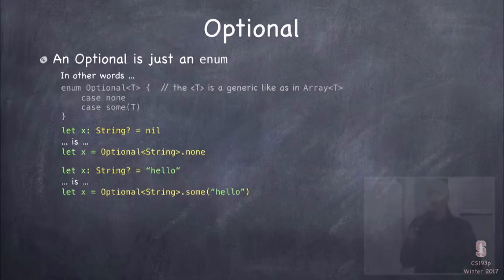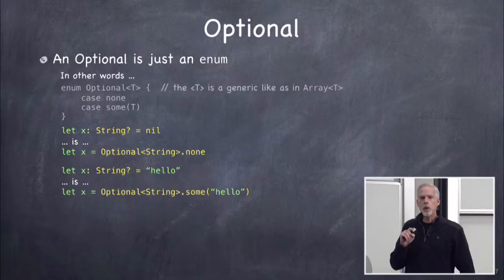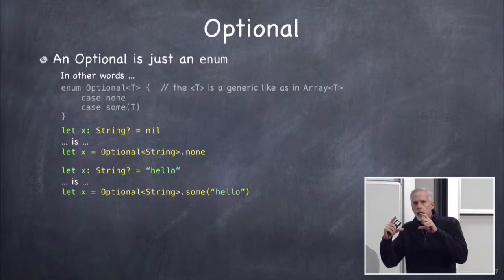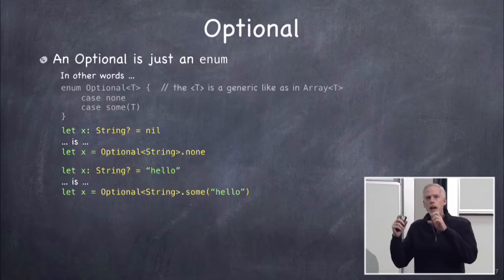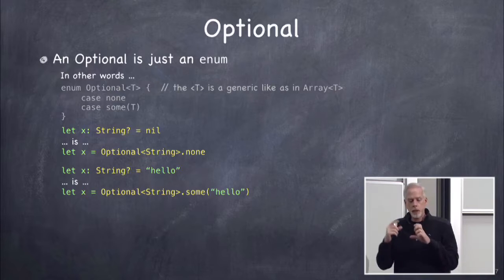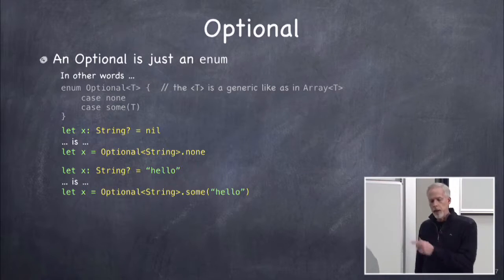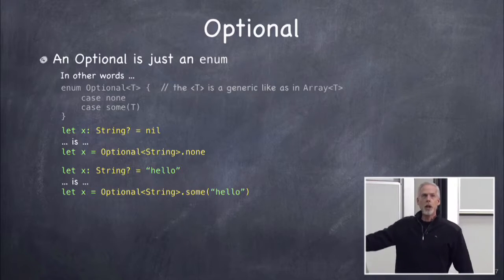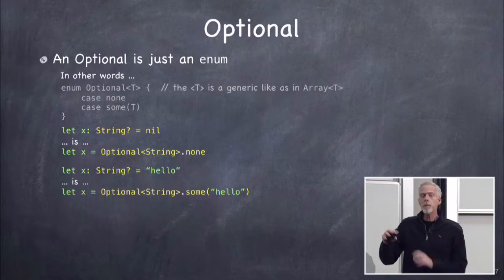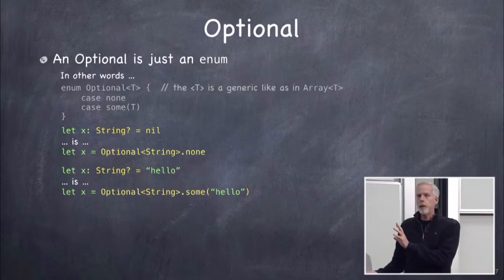What makes optional confusing is all those question marks and exclamation points — but that's just syntactic sugar to make code simpler because optionals are so common. Let x be an optional string that equals nil is exactly the same as saying let x equal Optional.none with angle bracket string. And if you set it to 'hello,' you're saying Optional<String>.some with associated value 'hello.'